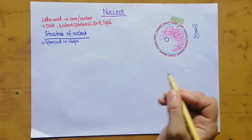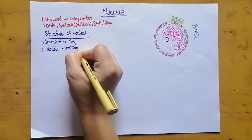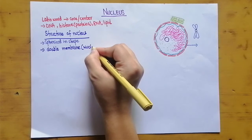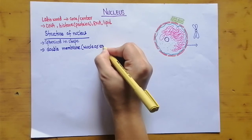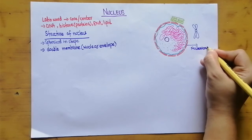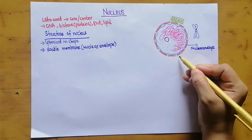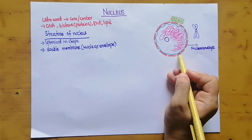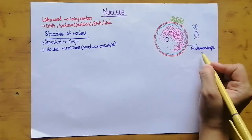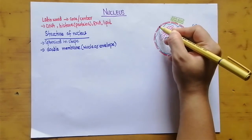The nucleus is made up of a double layer or double membrane, which is known as the nuclear envelope. The nuclear envelope is a bi-layer, meaning it is made up of two layers — one internal layer and one outer layer, as shown here in red.